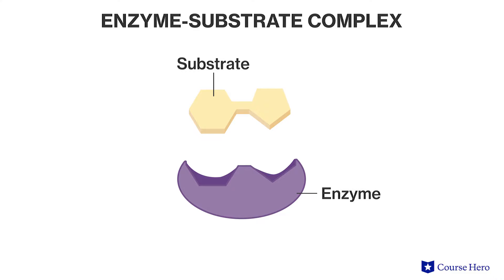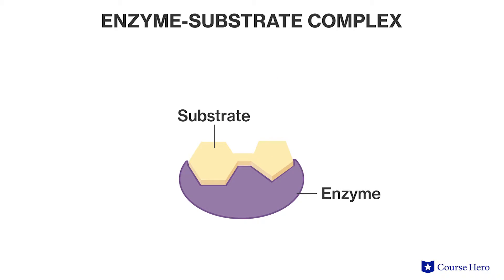The reactant an enzyme acts on is referred to as the enzyme's substrate, and it results in the formation of an enzyme-substrate complex. In most enzymatic reactions, the substrate is held in the active site of the enzyme. The active site is the specific region of the enzyme — usually involving only a few of the enzyme's amino acids — that binds to the substrate.